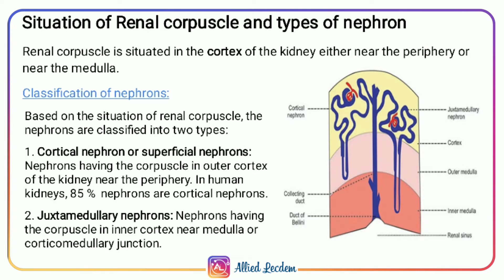The renal corpuscle is situated in the cortex of the kidney, either near the periphery or near the medulla. Based on the situation of the renal corpuscle, nephrons are classified into two types. Renal corpuscles present in the outer cortex of the kidney near the periphery are called cortical nephrons. About 85% of nephrons are cortical nephrons present in the human kidney.